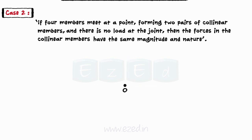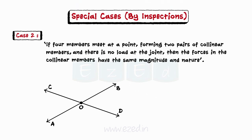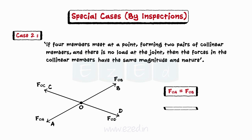For example, consider the joint O formed by four members OA, OB, OC, and OD. Members OA and OB are collinear, and OC and OD are collinear. Also, there is no load at joint O. Hence, by special case 2, we can conclude force in member OA is equal to the force in member OB, and force in member OC is equal to that in member OD.